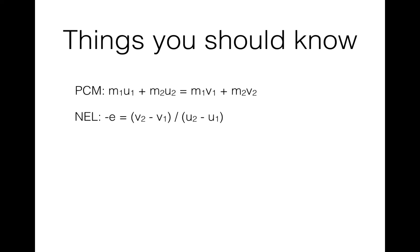M1 and M2 are the masses of the first and second sphere respectively. U1 and U2 are the initial velocities before the collision of the first and the second sphere. V1 and V2 are the velocities of the spheres after the collision. E is the coefficient of restitution, which is always a value between 0 and 1.